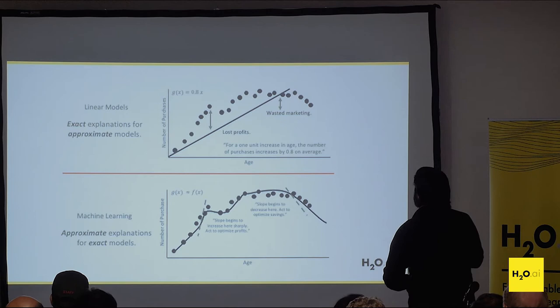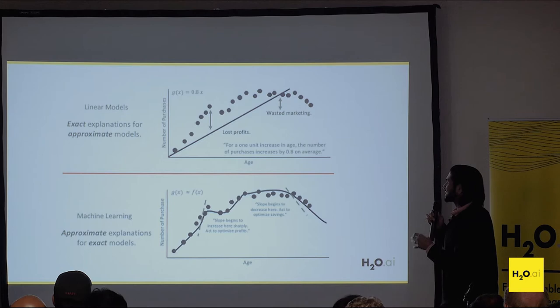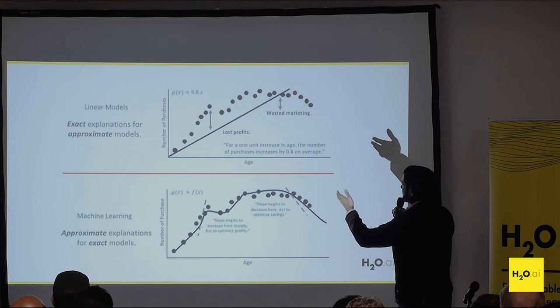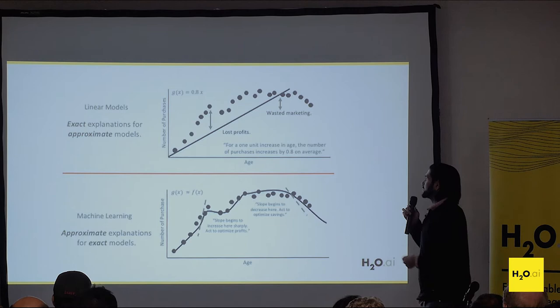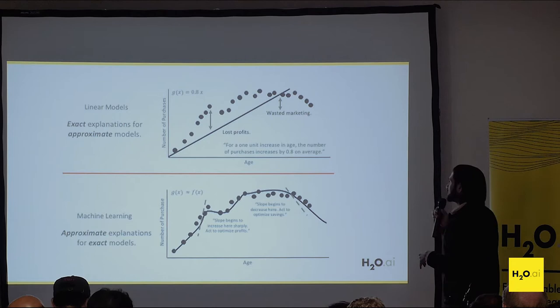Here's a comparison of linear models versus machine learning models. For linear models we have exact explanations for approximate models. For example, here's a plot of number of purchases by age — you can make a statement like: for one unit increase in age, the number of purchases increases by 0.8 on average. That's a typical linear regression scenario. The problem is the linear model is approximate, so there is room for error.